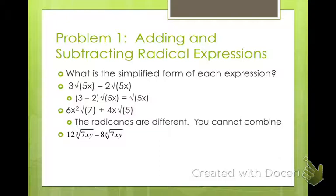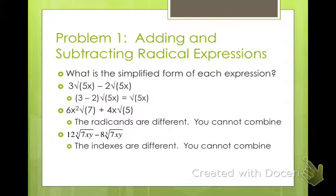12 cubed root of 7xy minus 8 fifth root of 7xy. These also have different indexes, so we can't combine them. Even though the radicand — the 7xy — is the same, they also have to have the same index.